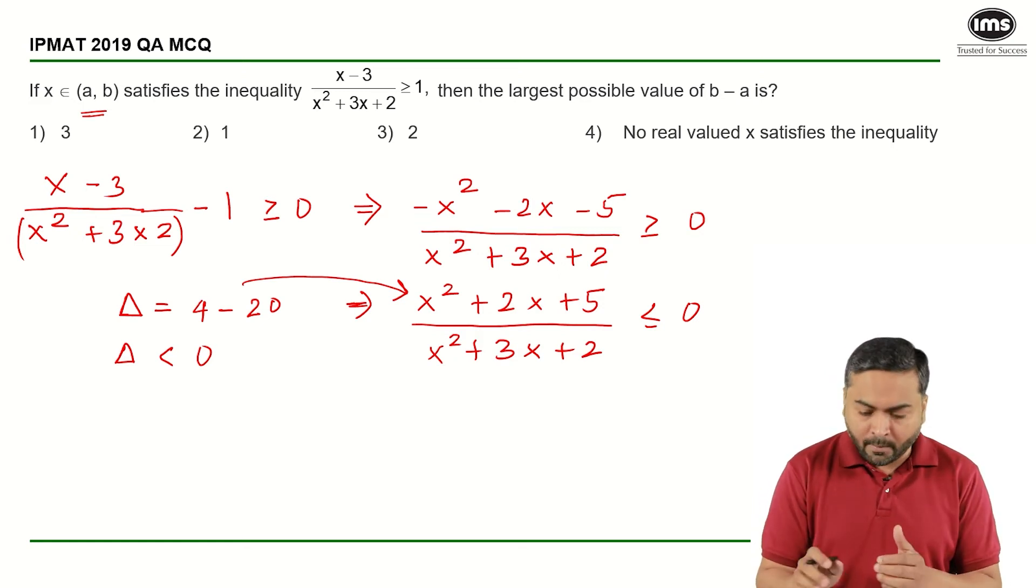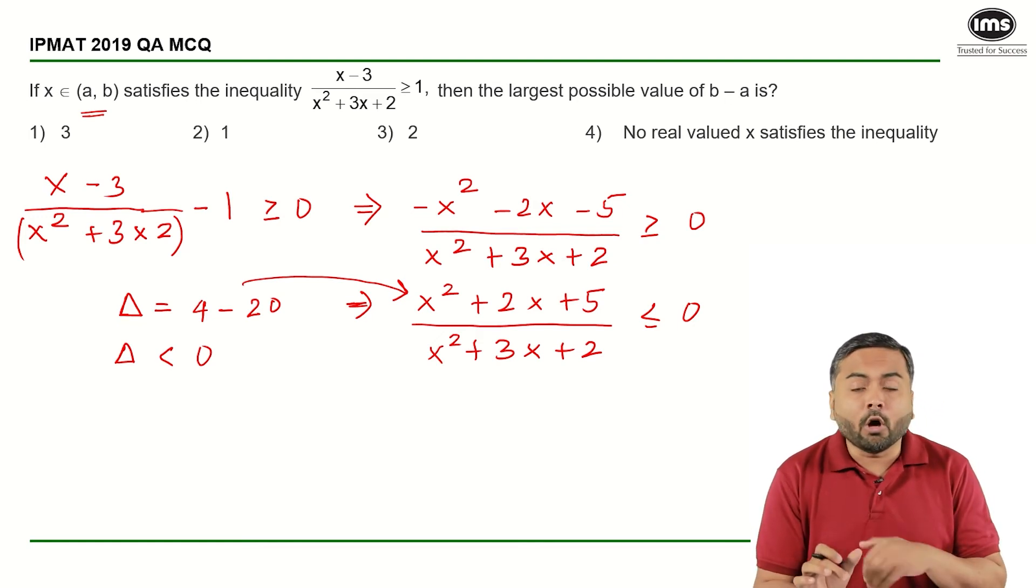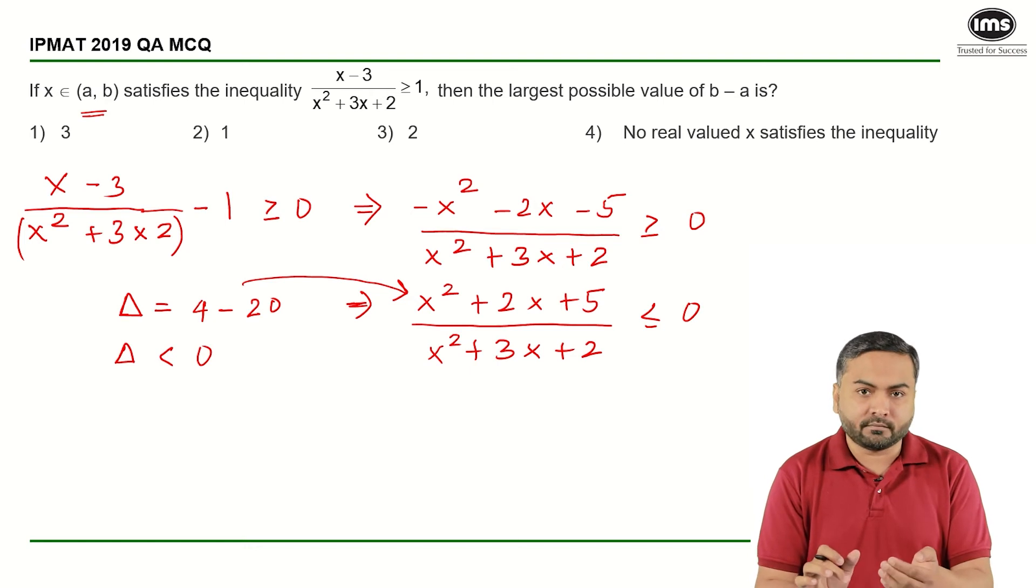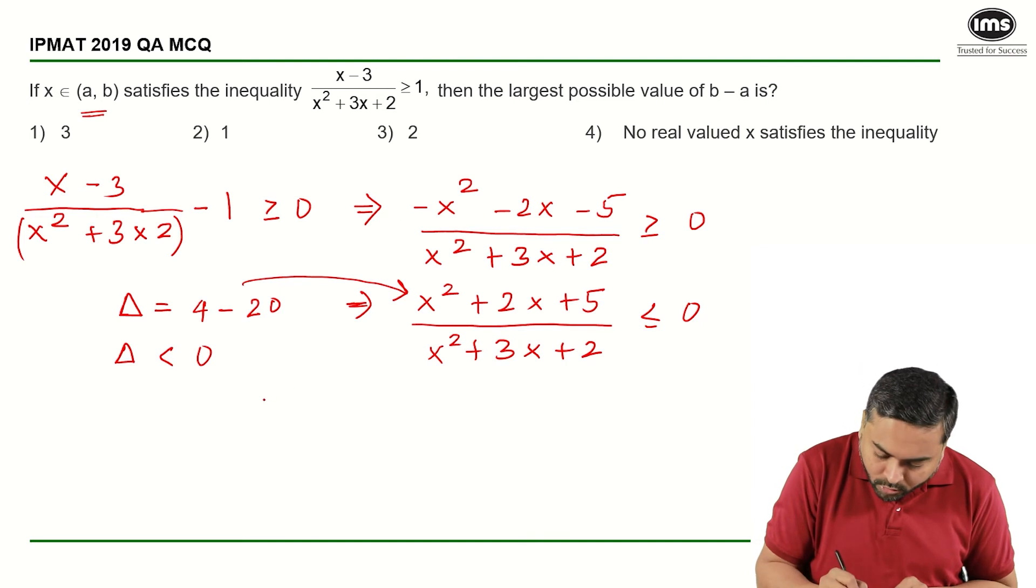So the value of this expression x² + 2x + 5 will always be positive. So positive upon something is less than or equal to 0, that gives me x² + 3x + 2 should be less than or equal to 0.